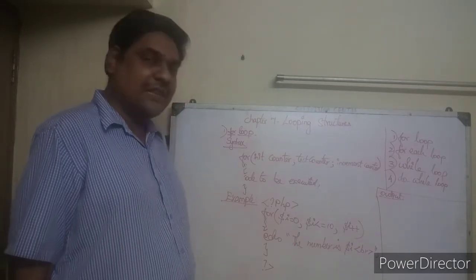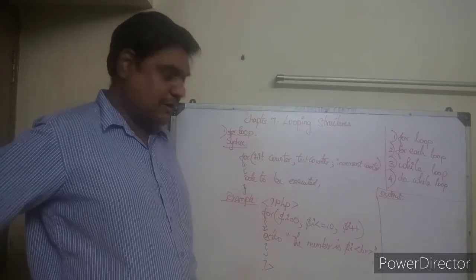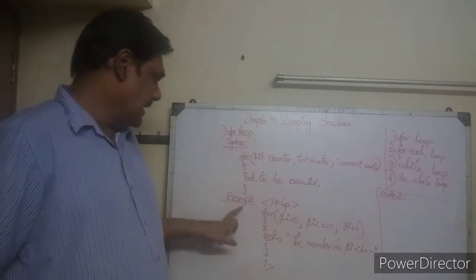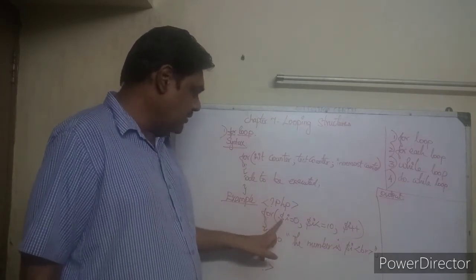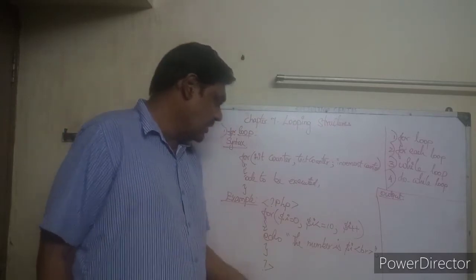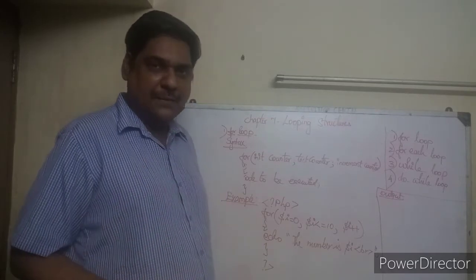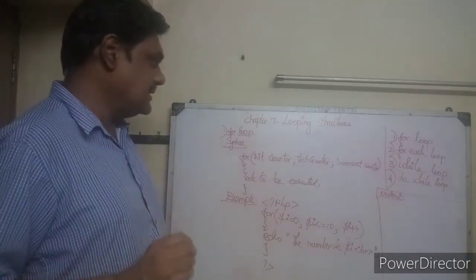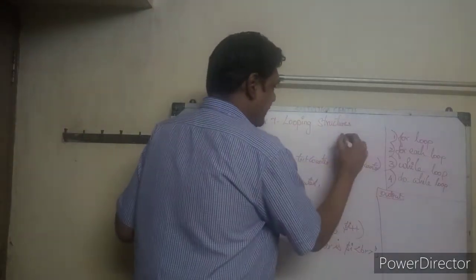Now let us see it with an example. PHP code starts. For loop: `dollar i is equal to 0` — that is the init counter. Variable `i` is created and `0` is stored in it. So in memory, `i` holds the value `0`.